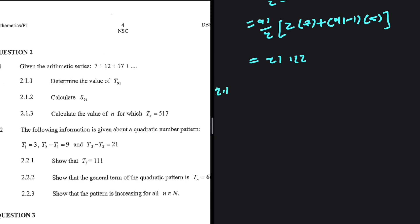Let's go ahead and do 2.1.3. Calculate the value of N for which TN equals 517. Well, TN, we know that that is A plus N minus 1 multiplied by the common difference. It is apparently equals to 517. We want to find N. We have A, the first term. We have the difference and the value. It should be easy to find N.